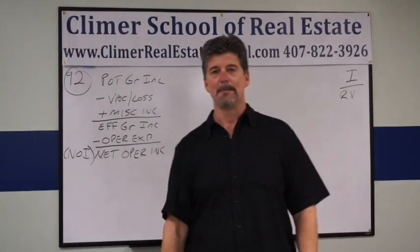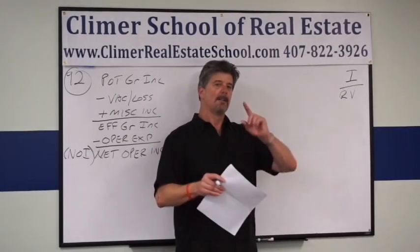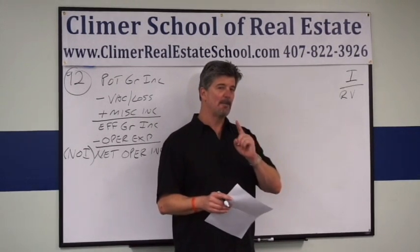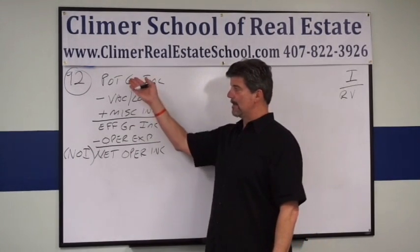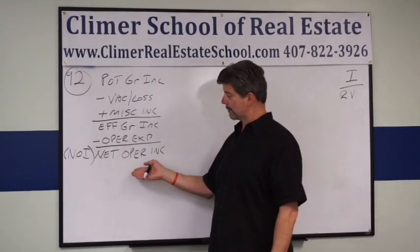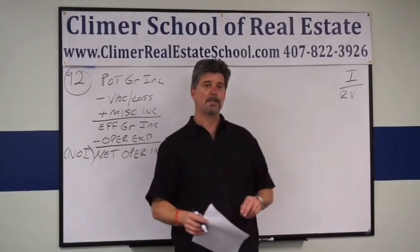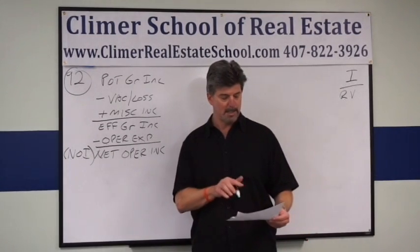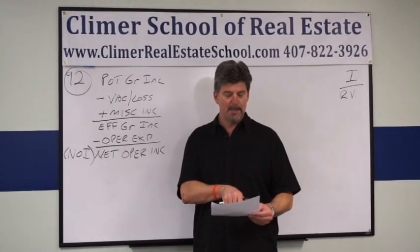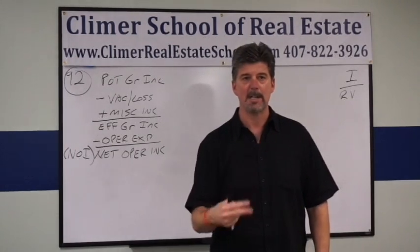Put these together and you get a problem on your state real estate exam. Here's what's going to happen: the state will flat out give you one of these three variables guaranteed. Then they'll give you enough information to calculate a second one — and 99% of the time that will be Net Operating Income. Once you've got two, the question asks for the third one. This problem is a great example: they're giving you net income and they're giving you R — the investor desires an 8% return — and asking for the value of the property. This also contains two tricks you'll see on the state exam.